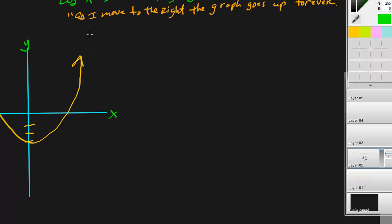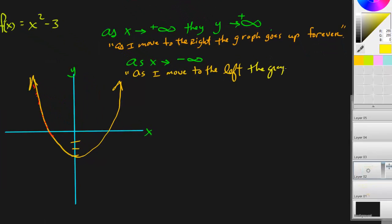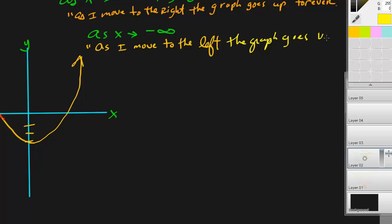Now, if I do the other side and I say, as x goes to negative infinity, now I ask you, if I translated just that part in words, what would it be? Well, it would be as I move to the left. So think about it. As I move to the left on this graph, I'm moving left. What other direction am I going? I'm going up. As I move to the left, the graph goes up forever.